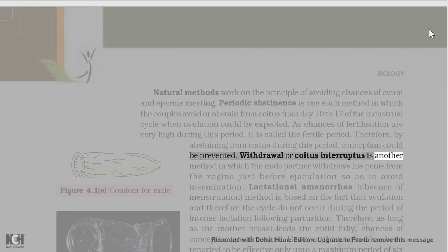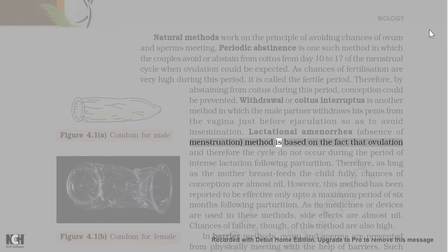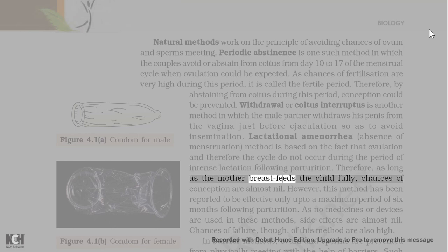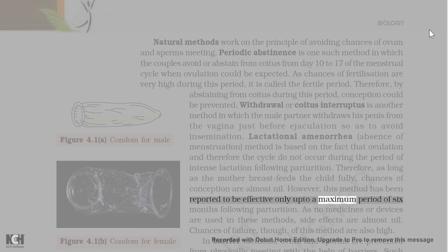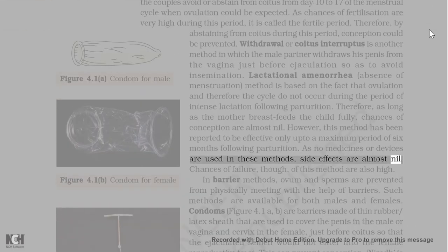Withdrawal or coitus interruptus is another method in which the male partner withdraws his penis from the vagina just before ejaculation to avoid insemination. Lactational amenorrhea (absence of menstruation) method is based on the fact that ovulation and the menstrual cycle do not occur during the period of intense lactation following parturition. As long as the mother breastfeeds the child fully, chances of conception are almost nil. However, this method is effective only up to a maximum of 6 months following parturition. As no medicines or devices are used, side effects are almost nil, but chances of failure are also high.